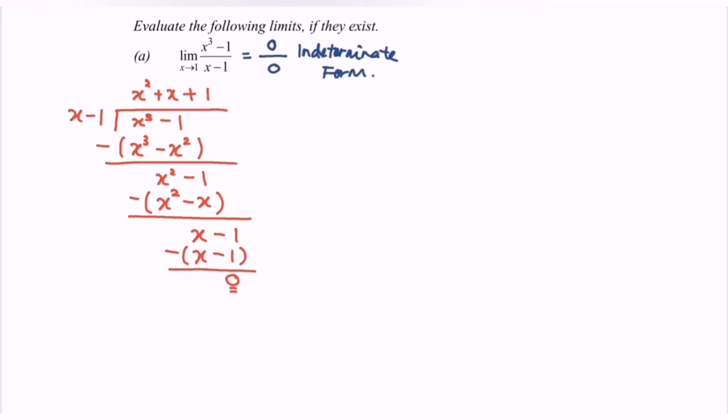Now I'm going to rewrite the situation. The limit when x approaches 1, we will have x square plus x plus 1, times x minus 1, over x minus 1.